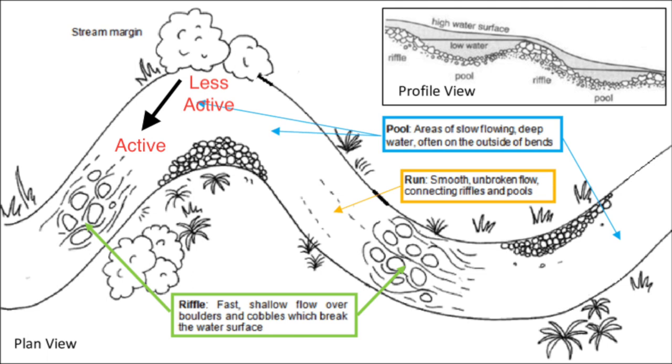The second area are known as pools. Pools are areas of deeper, slower flowing water either downstream from a riffle or on the outside bends.